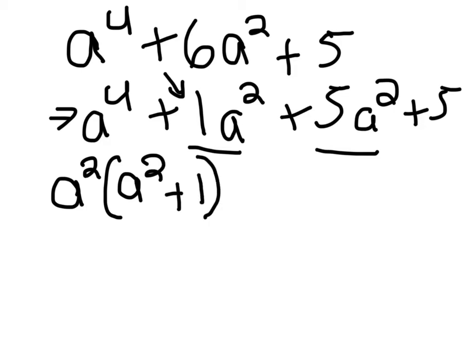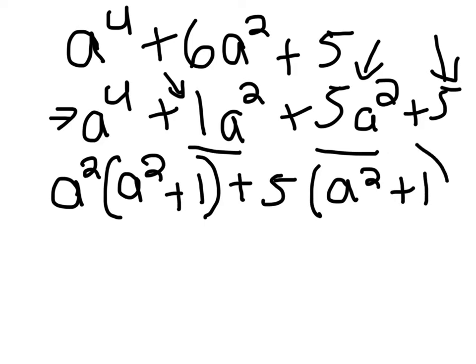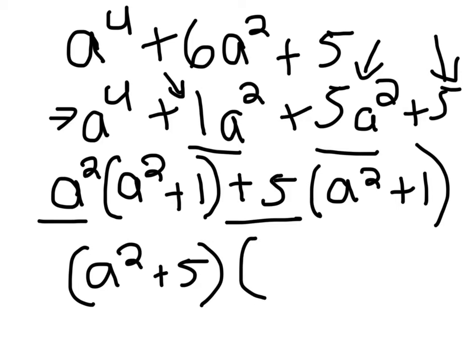And the next one, we're going to add a 5 because you can take out a 5 from this one and this one. Parentheses, a squared plus 1. And then the final answer, we take a squared plus 5. And then the next one, since this one and this one are the same, we would keep those. So a squared plus 1. And that's your final answer.